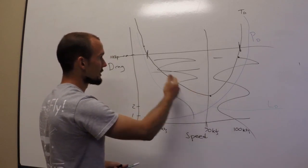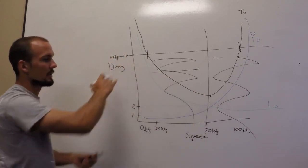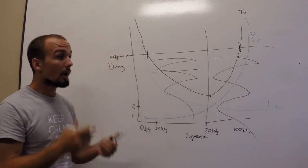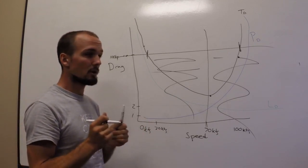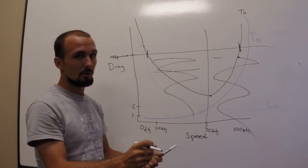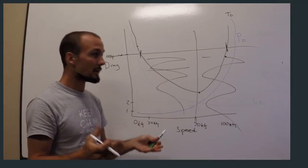And remember, the slower you go, the more power it takes. Add that power in there. Power controls altitude. Pitch controls airspeed. When you want to go faster, push the nose forward. When you want to go up, push the power in. There's no other way around it.